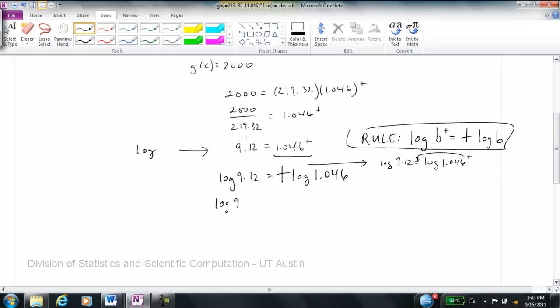So now that I have this, log 9.12 is equal to t log 1.046. I can determine what these numbers are. And I get .95999 is equal to t times .01953. When I divide this back over here, t is equal to .95999 divided by .01953.